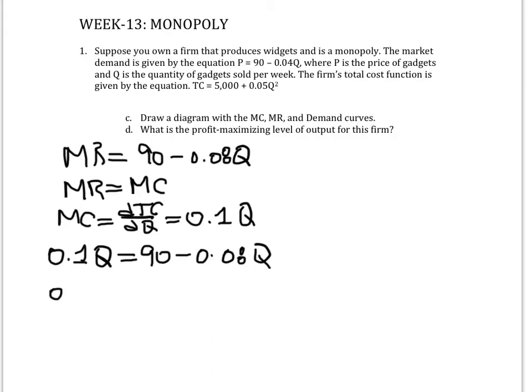So this will be 0.18Q equals 90. So Q will be equal to 90 divided by 0.18, and I'm doing this as I do it with you, so Q is 500.